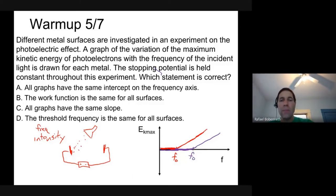Okay, so with that in mind, let's see, letter A, all graphs have the same intercept on the frequency axis. That's not true. The cutoff frequency is different, as we see. The work function is the same. That's not true because the work function is related to that cutoff frequency. So if the cutoff frequency is different, the work function is also different. D, the threshold frequency is the same for all surfaces. That's the same. That's the threshold frequency is the intercept on the frequency axis. So A and D are pretty much saying the same thing. So C, all graphs have the same slope, is the only correct answer. Okay, so the correct answer is letter C. All graphs would have the same slope.